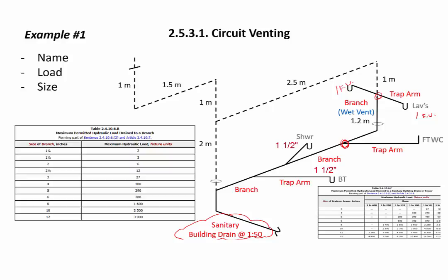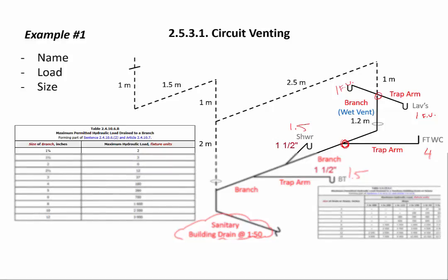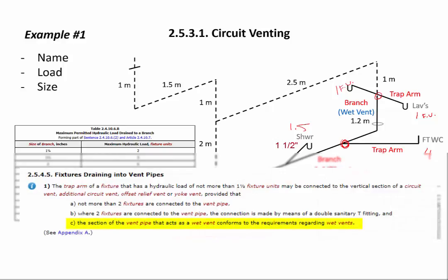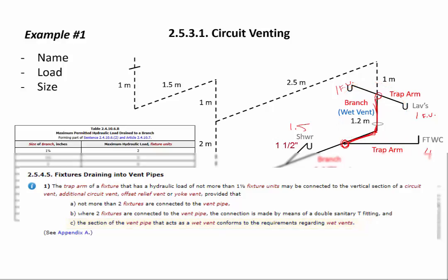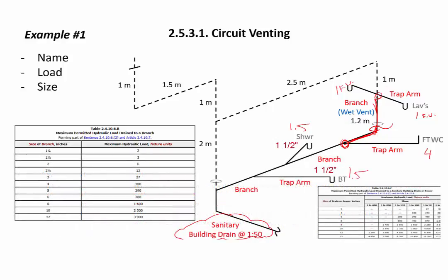From table 2493: the flush tank water closet is four fixed units, the shower is 1.5 fixed units, and the bathtub is also 1.5 fixed units. Article 2545 says this drain section where we drain into the circuit vent must conform to the requirements for wet vents. One requirement for wet vents serving water closets is that it be a minimum two inch. Then downstream of the trap arm connection for the water closet we have six fixed units on this branch section — minimum three inch because of the upstream water closet, even though the branch table would allow two inch for six fixed units.